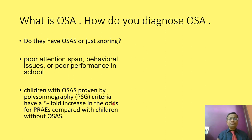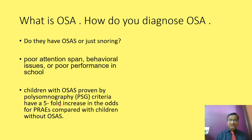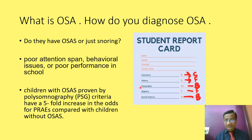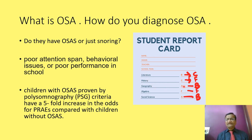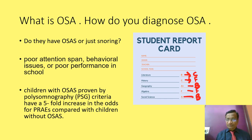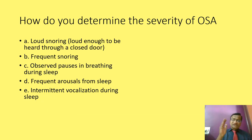Children with OSA are a concern because there is a five-fold increase in perioperative complications — major obstruction, bronchospasm, laryngospasm, difficult extubation, and cough — if there is severe pre-operative OSA. A child's declining school report card from A to B or C to F can indicate severe OSA.